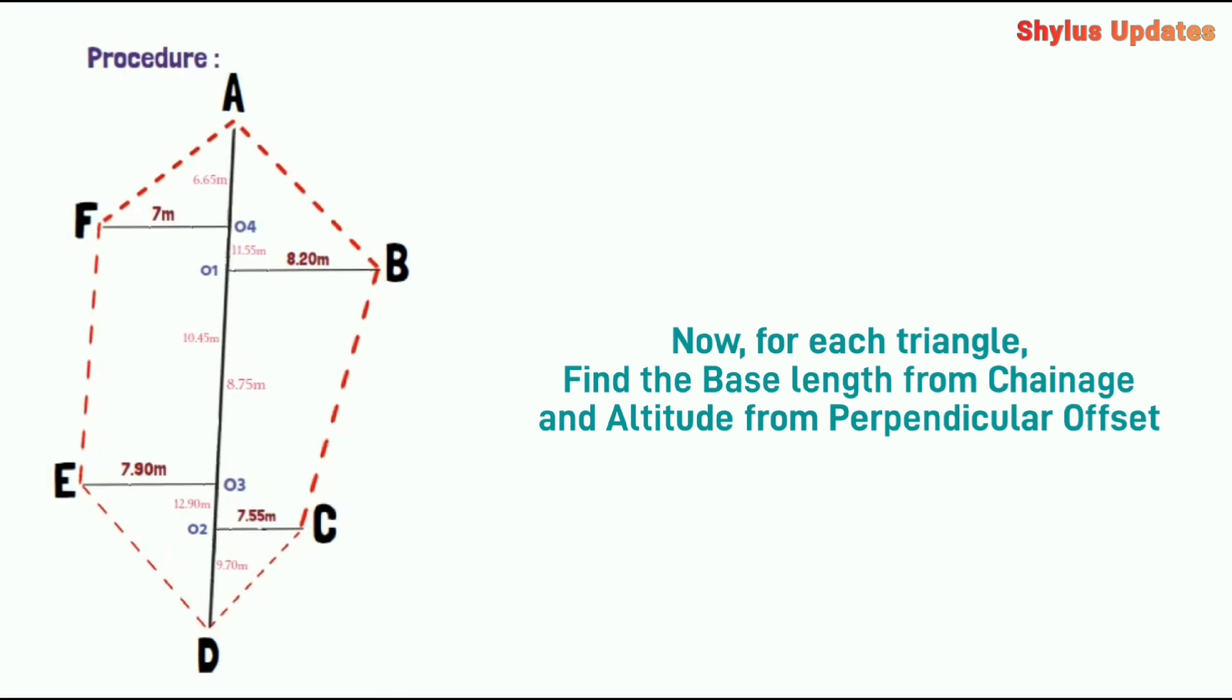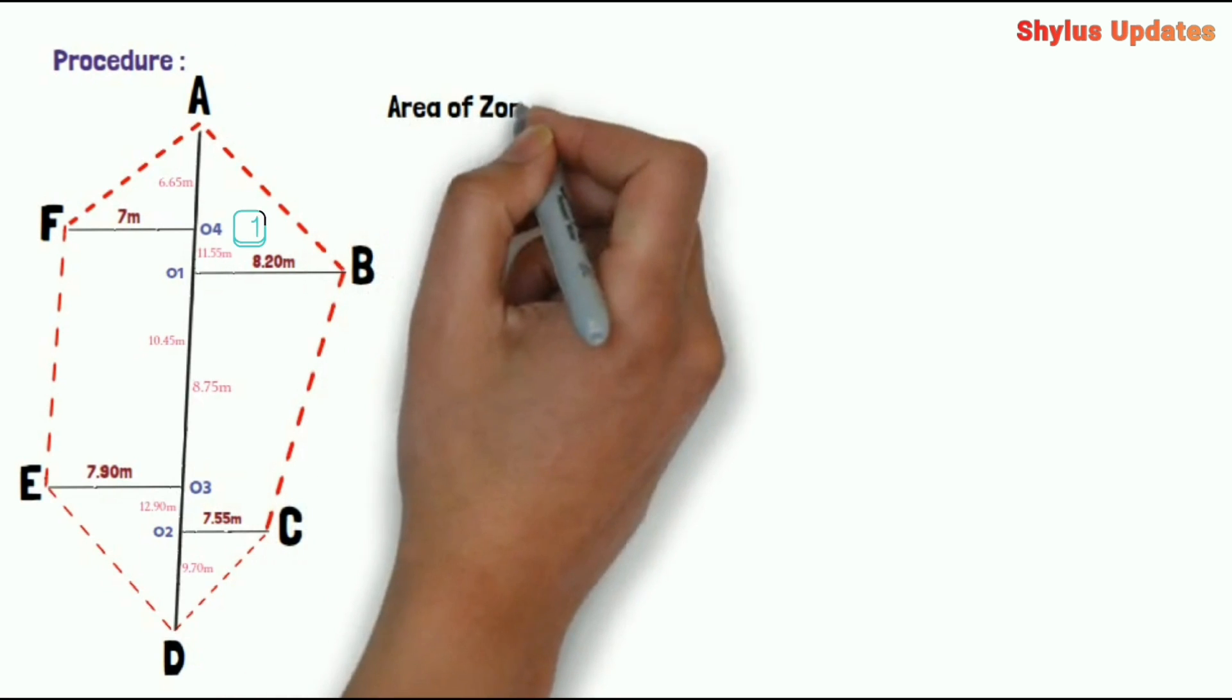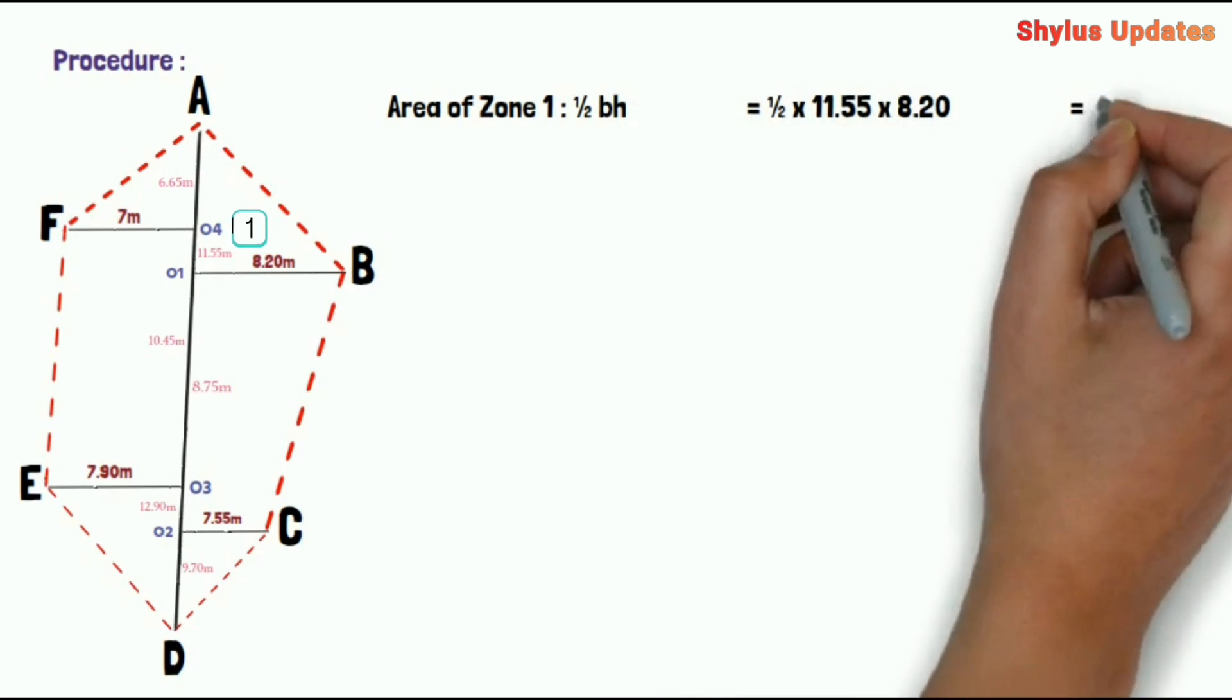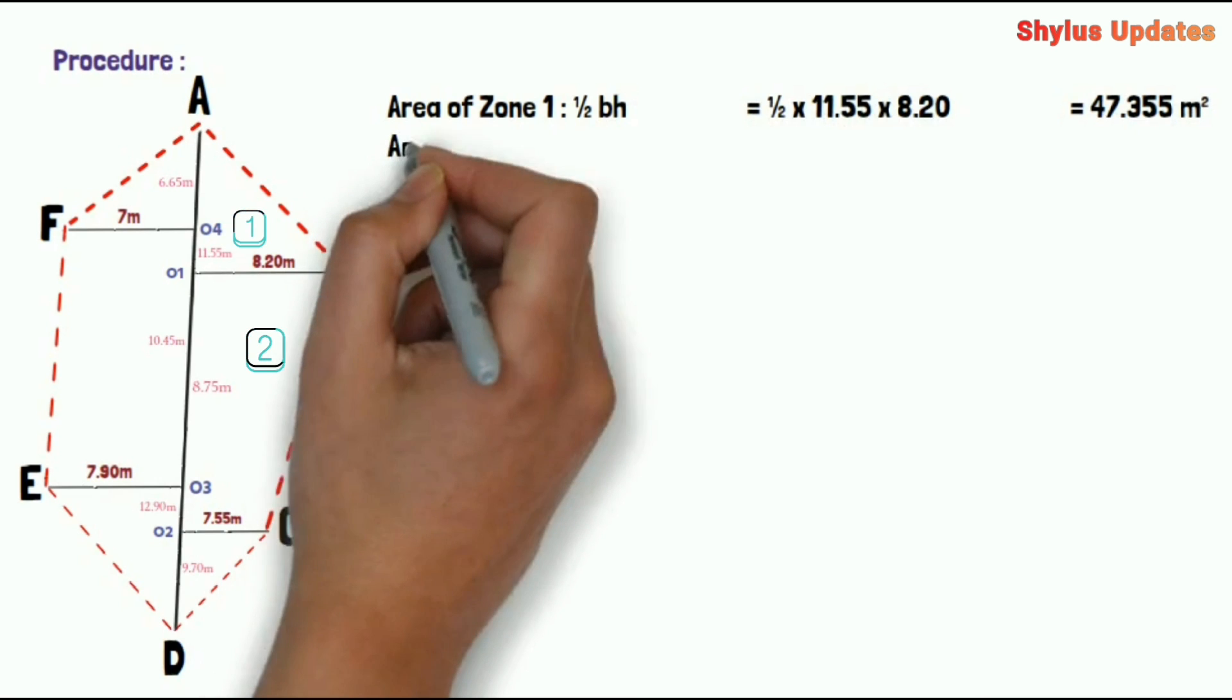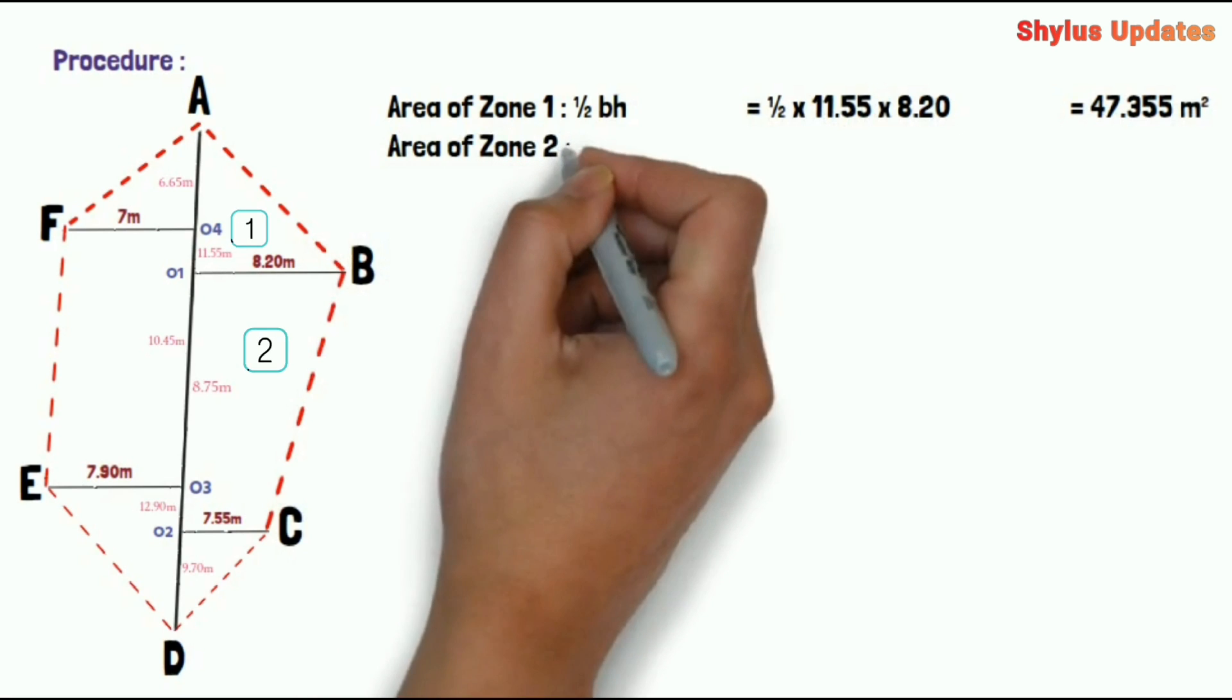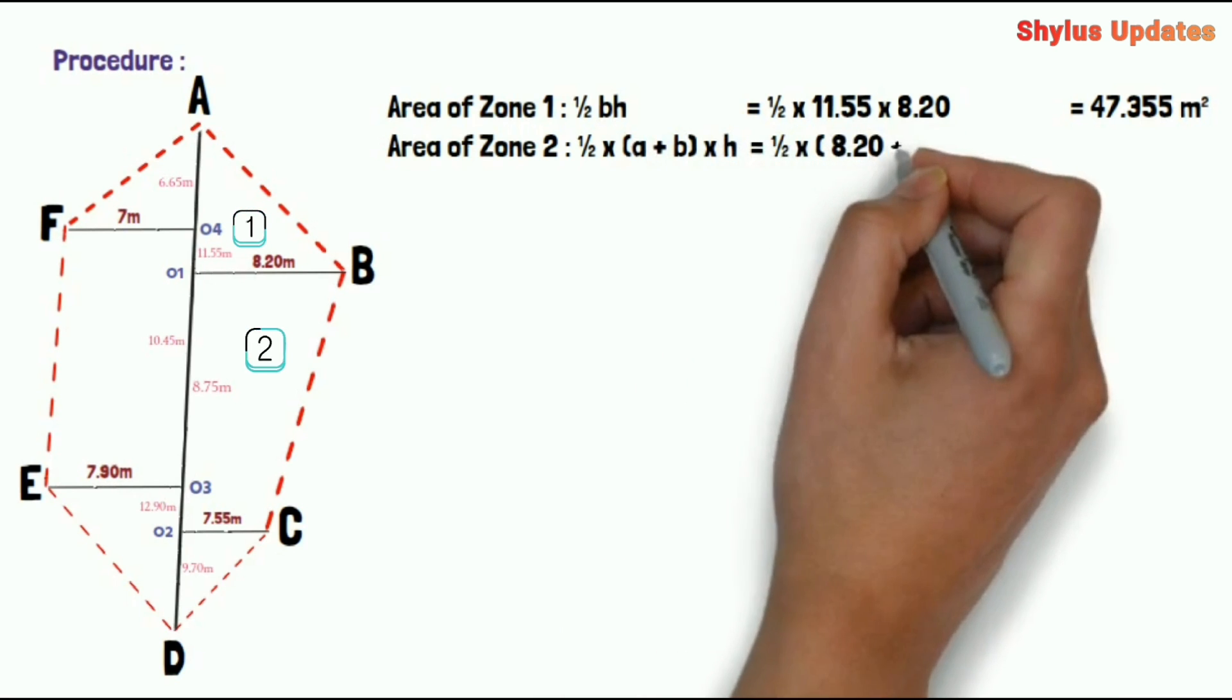Now let's start calculating area for this land. Area of Zone 1 is a triangle, so the triangle formula is 1/2 B × H. When you substitute the values, you get 47.355 meter square. Area of Zone 2 looks like trapezium, so we have to use the trapezium formula: 1/2 × (A + B) × H. Now substitute the values in this formula and you get the value 68.9063 meter square.